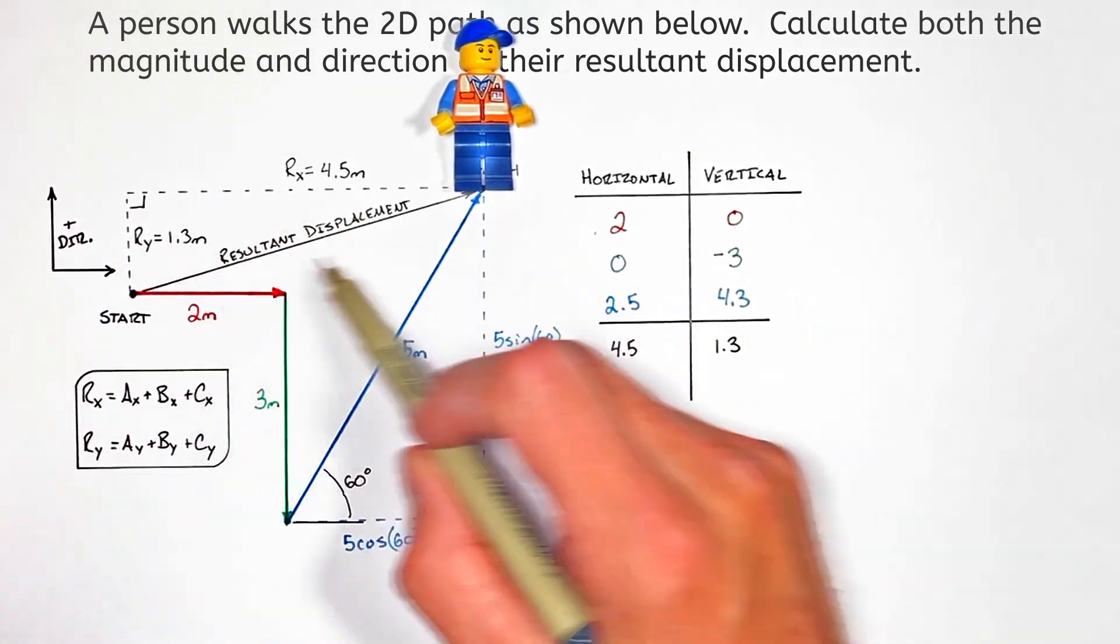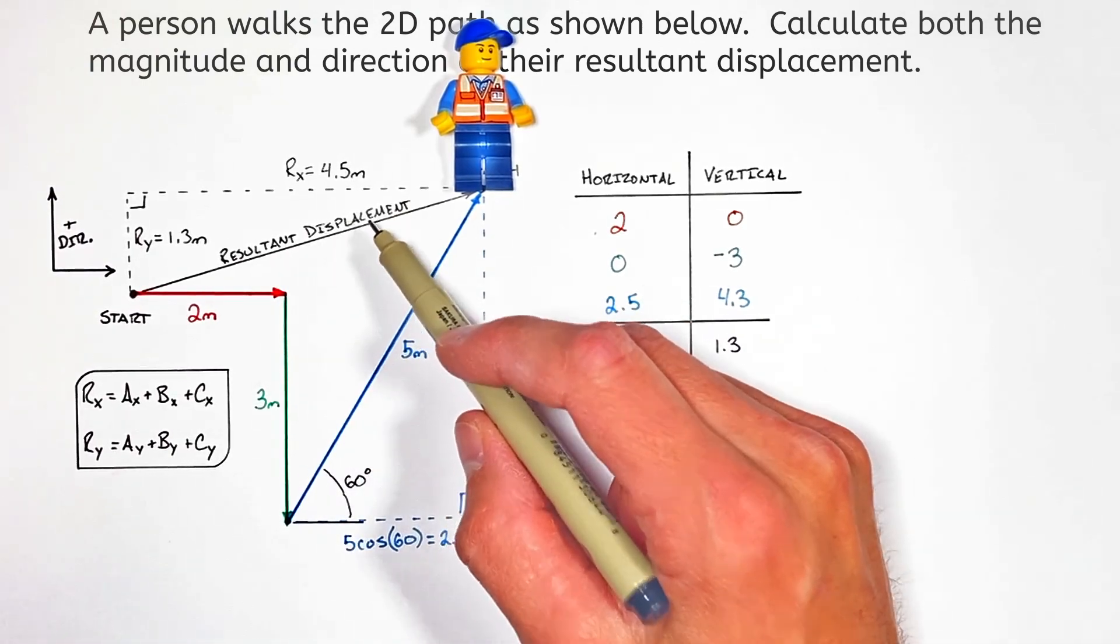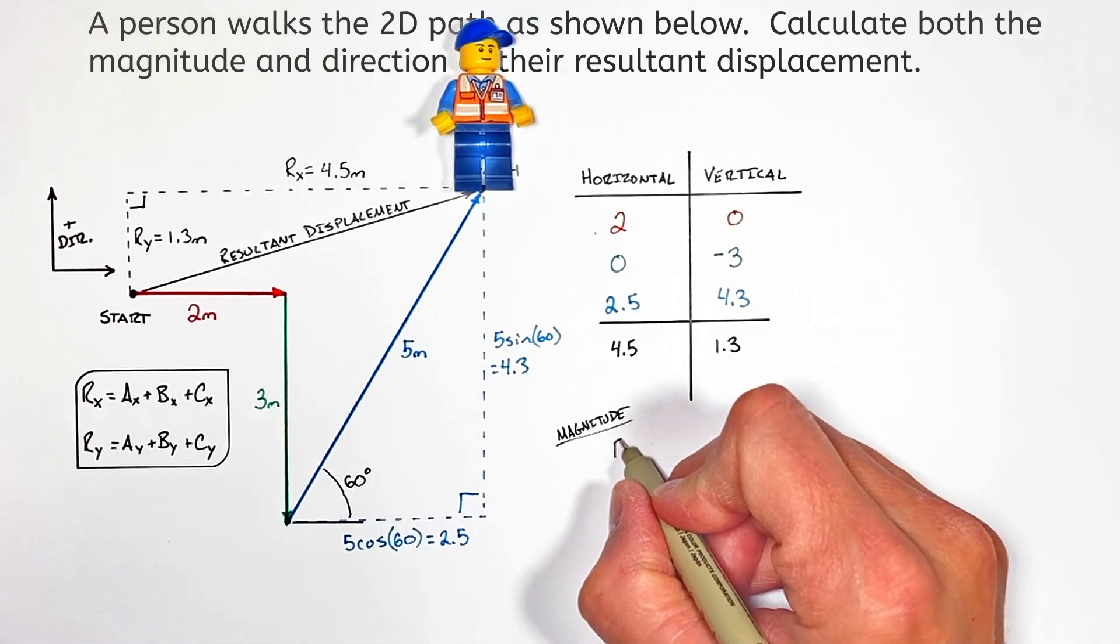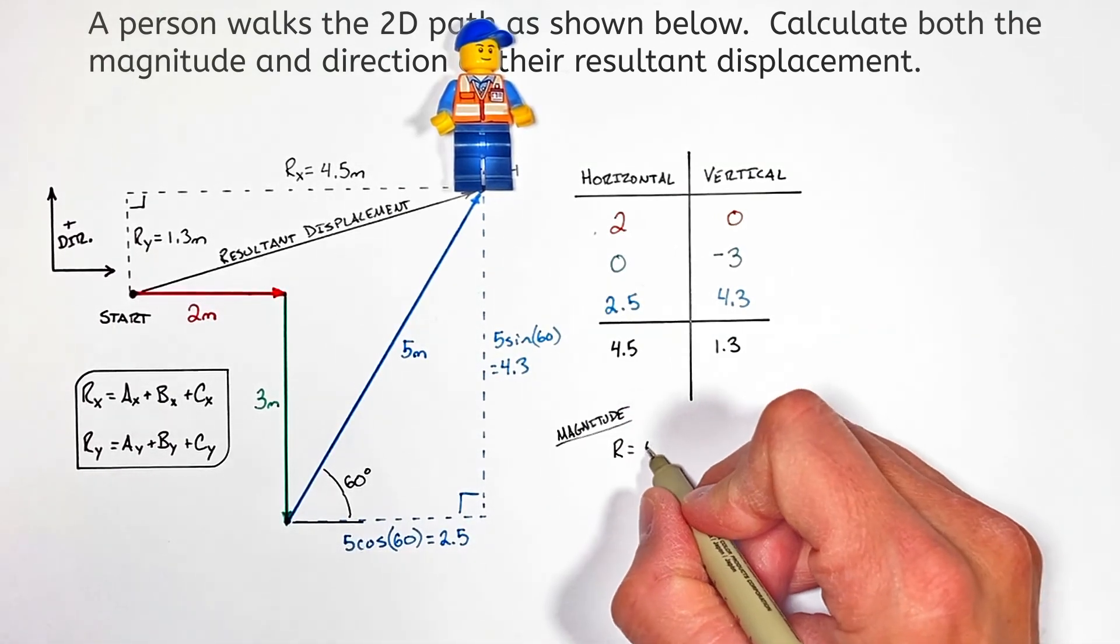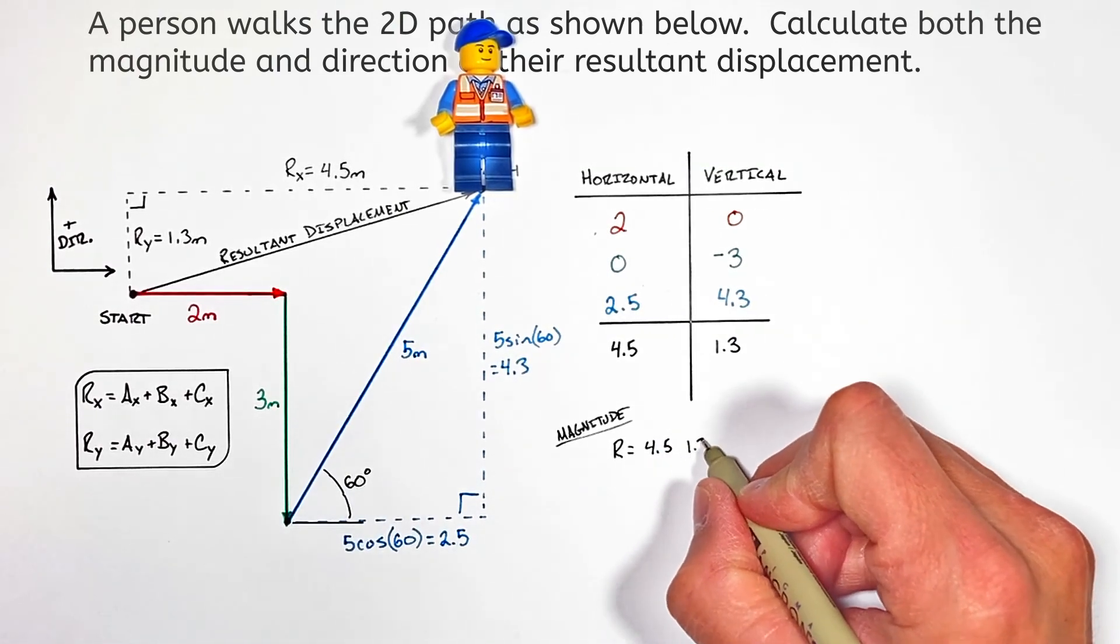Now that we have the two components of our resultant vector, I'm going to show you how to find both the magnitude and direction of this vector. We know the resultant vector R has a horizontal component of 4.5 and a vertical component of 1.3.